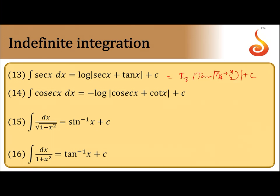Integral of cosec x equals -log|cosec x + cot x|, or log|cosec x - cot x| plus constant, which can also be written as log|tan(x/2)| plus constant.